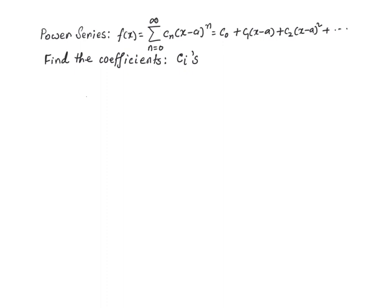In this video I am going to find out the coefficients of a power series expansion. This is in the standard format: the power series summation from n equal to zero to infinity of c sub n times x minus a raised to the power n. If I expand it, this gives c sub zero plus c one times x minus a plus c two times x minus a whole squared, and so on. Our objective is to find these coefficients c sub zero, c one, c sub two.